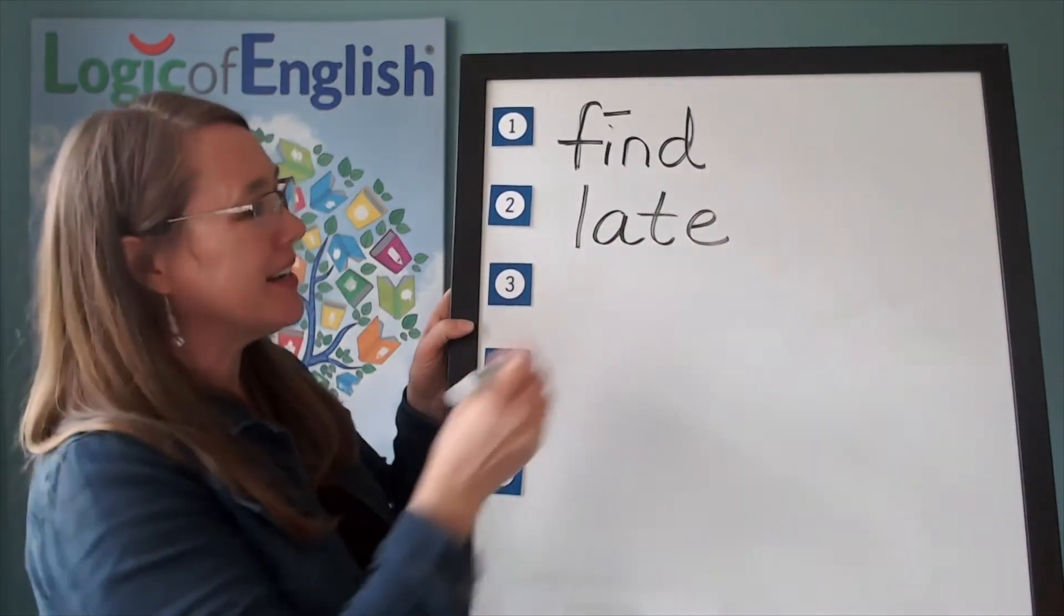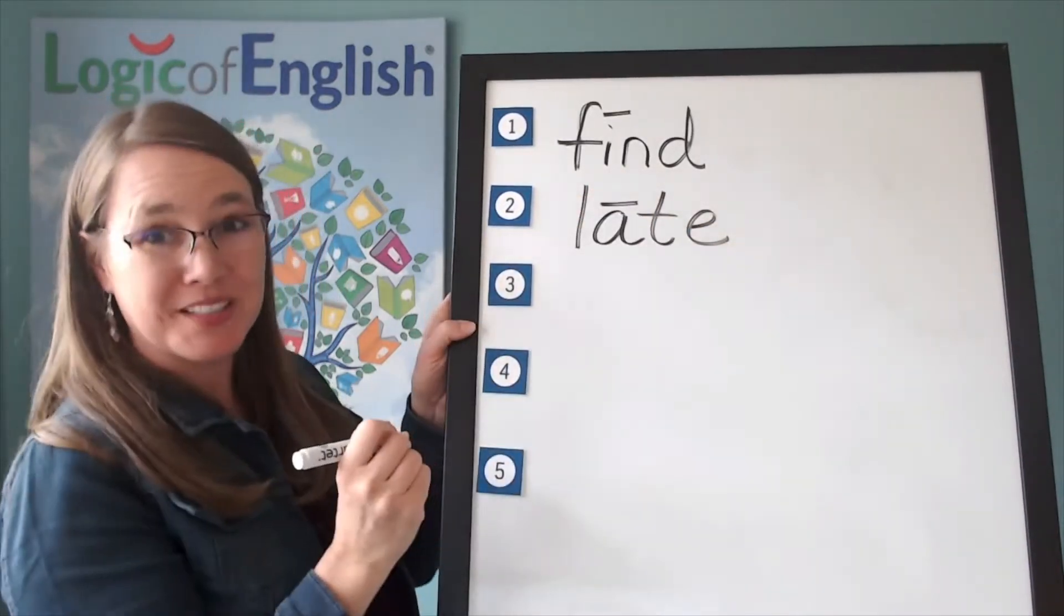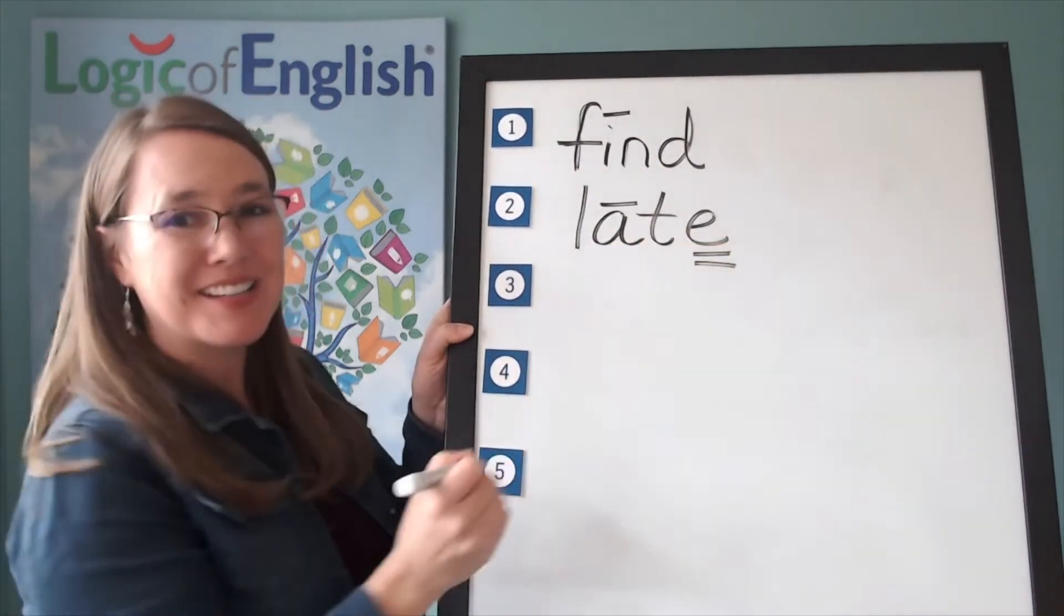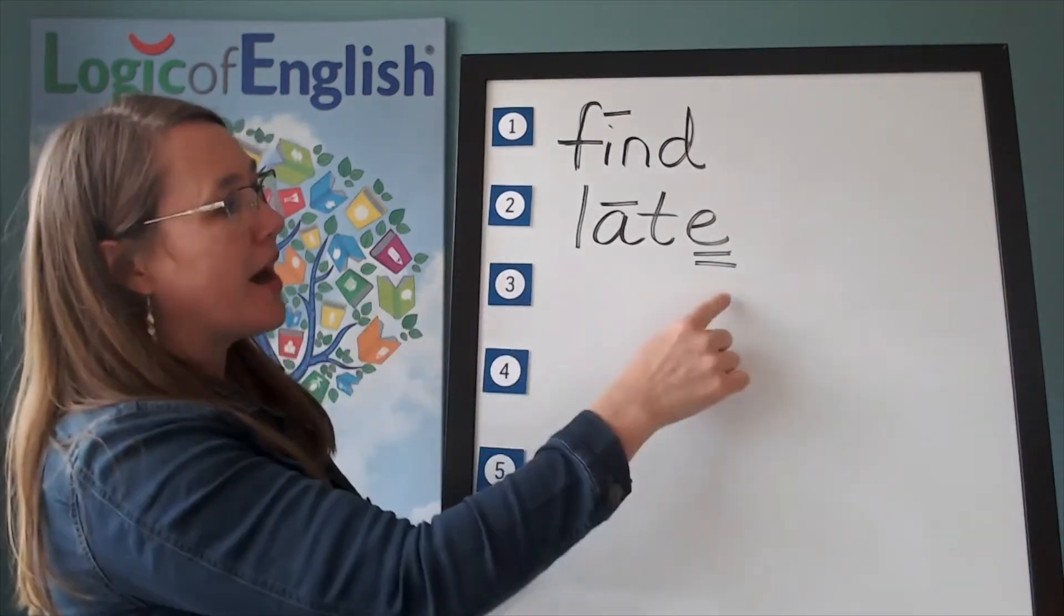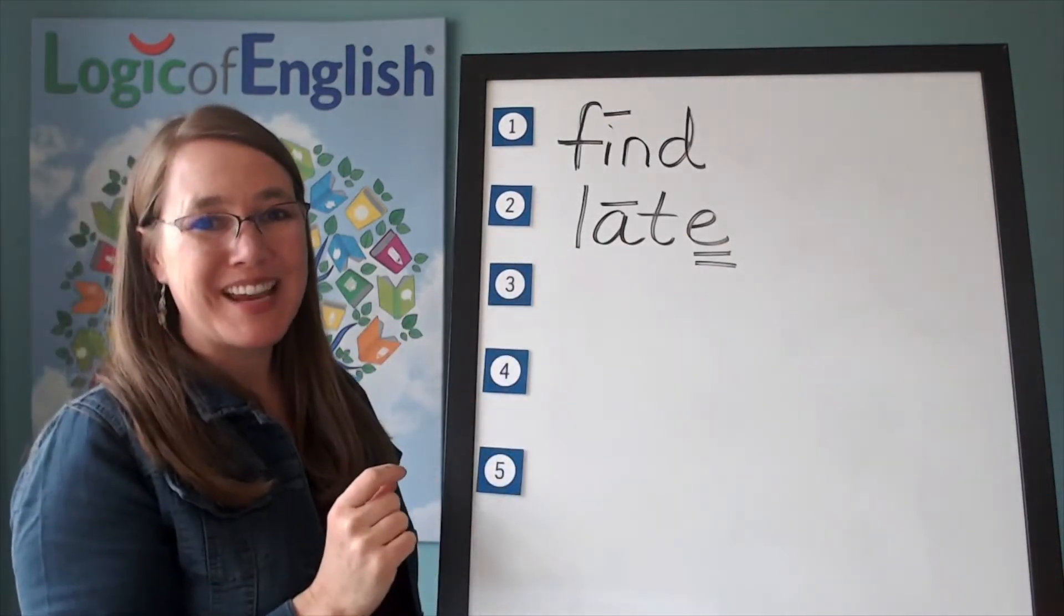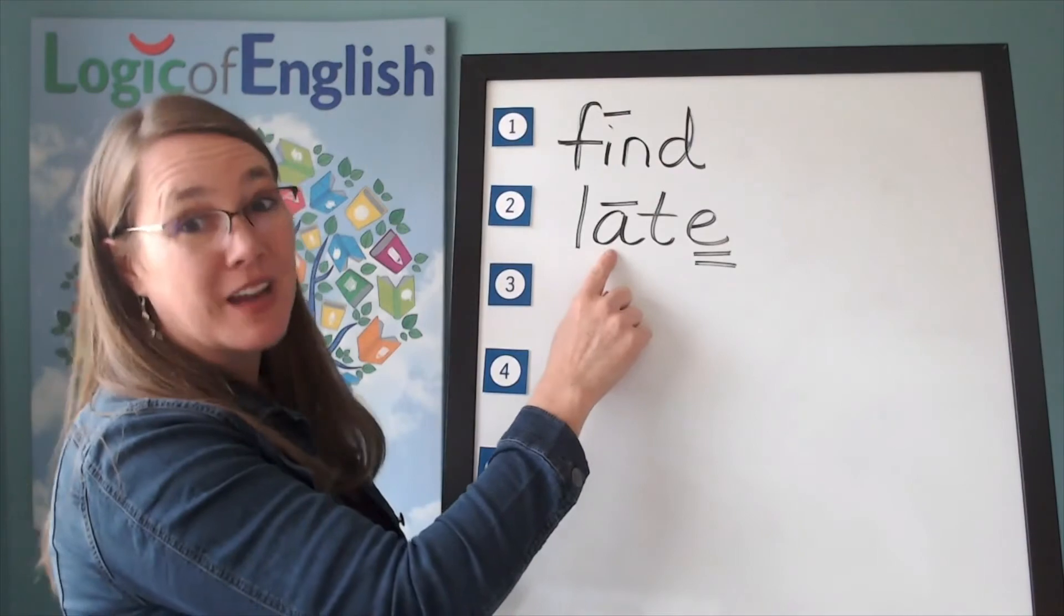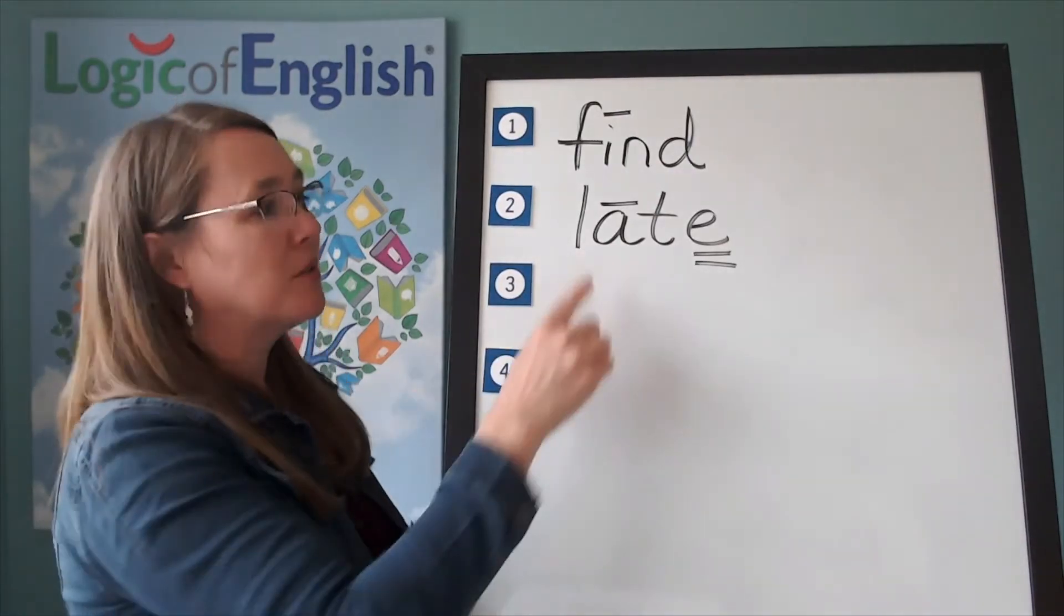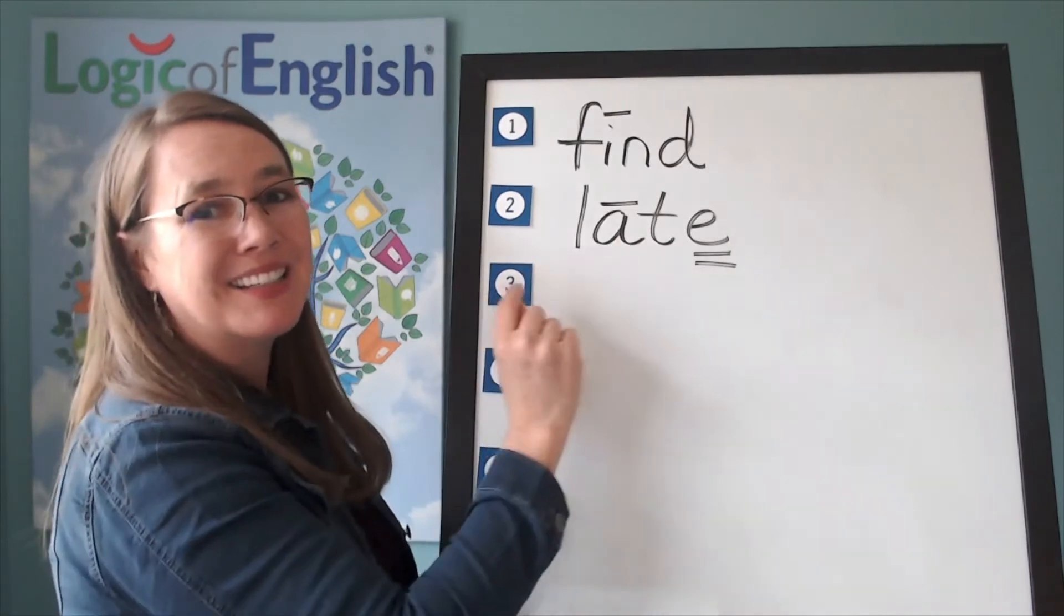How do we mark it? We'll put a line over the A. Why? Because it said its long sound. And we'll double underline the silent final E. Why do we have a silent final E in late? You're right. The vowel said its long sound because of the E. Let's sound it out. L-A-T. Late.